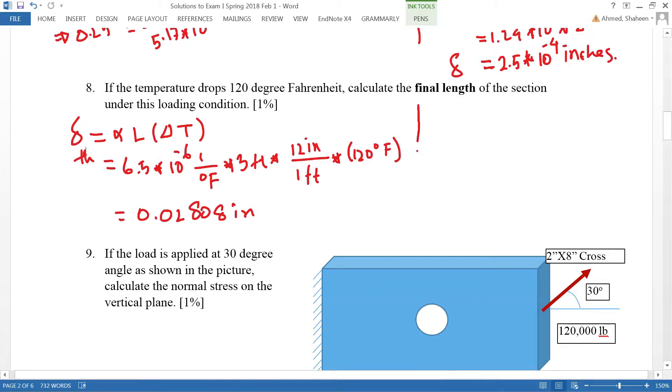Previously, we calculated that due to the force applied, 120,000 pounds force, we found that value is 0.0186 inches. So this was an increase because of the tensile force, and this thermal temperature dropped, so this was a decrease.